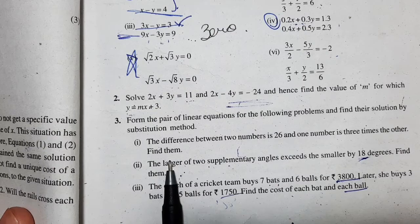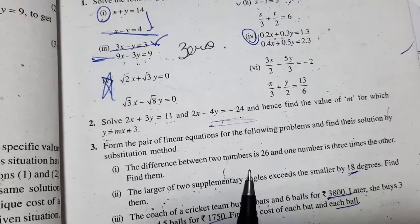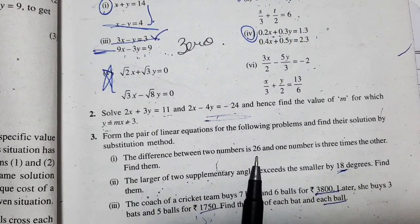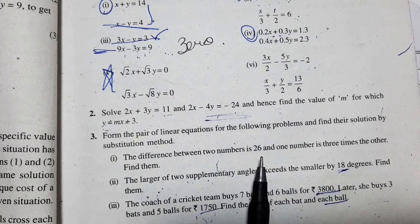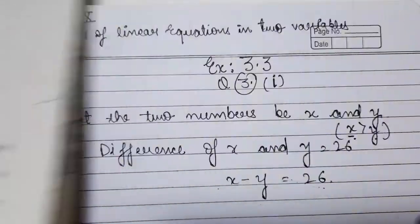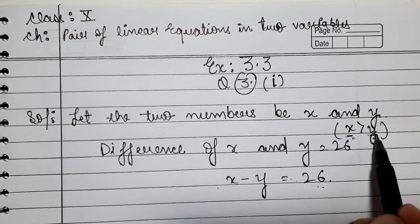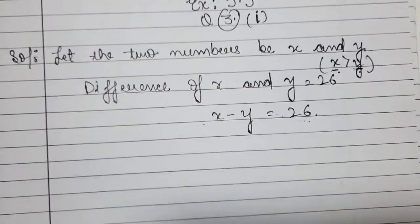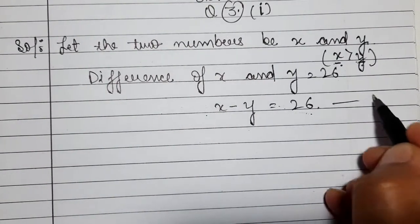Let the two numbers be x and y. One number is x and the other is y. If the difference is 26, one number is bigger and one number is smaller. So the difference between the two numbers gives us: x minus y equals 26. This is our first equation.